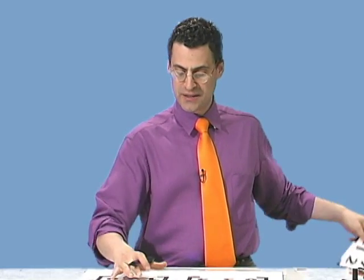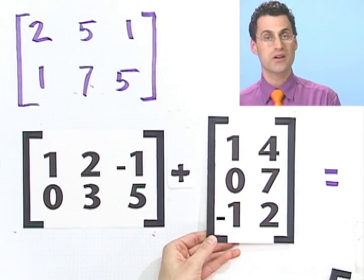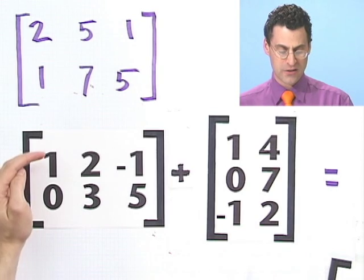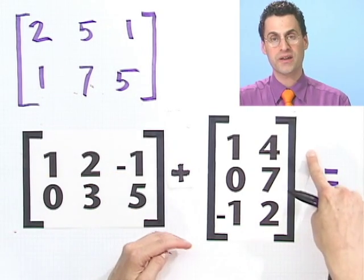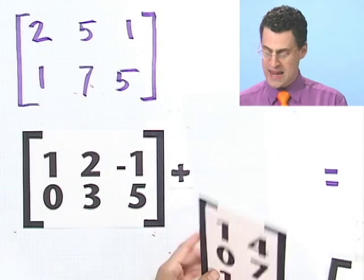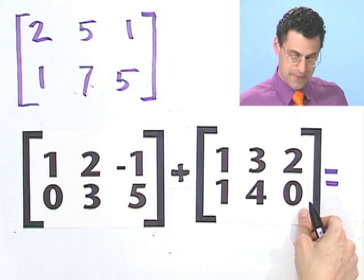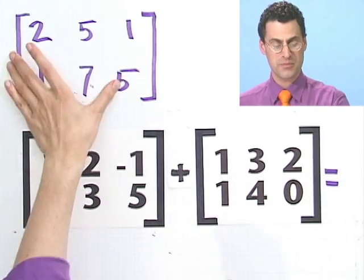You just add the corresponding terms. That's why it's difficult to add these two things together. There are no corresponding terms. There's nothing that corresponds to one, three, because there's no third thing here. So you can only add matrices that look the same. And then you just add the corresponding terms and get something else.